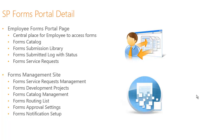Employees can make service requests for questions, issues, or requests for new forms to be created. There's also a forms management site where forms administrators can receive service requests, manage forms development projects, and update the forms catalog. A forms routing list tells the system where a form should be routed — what department, site, library, and what approval processes need to be kicked off — all through lists without having to get into workflows. Automated notifications keep employees informed throughout the process.